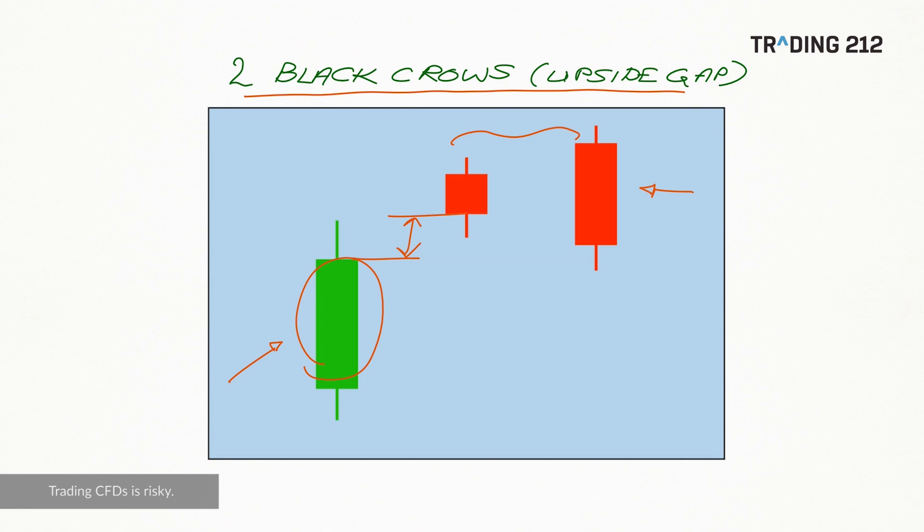The name is derived from black and white candlestick charts where those would be two black candles, like two black crows high up looking down. Now ideally we'd want this second crow here to open above the previous crow, the first crow, and then close beneath the first crow's close.